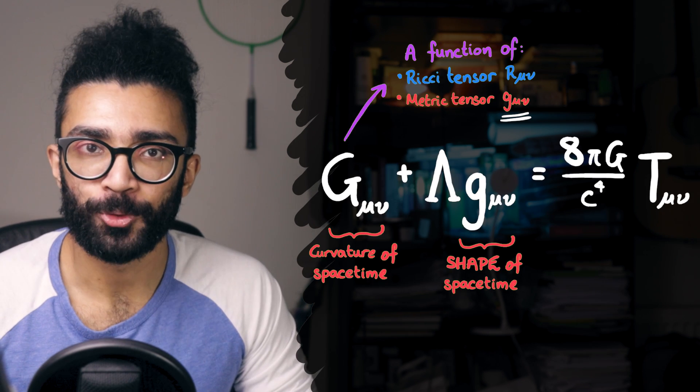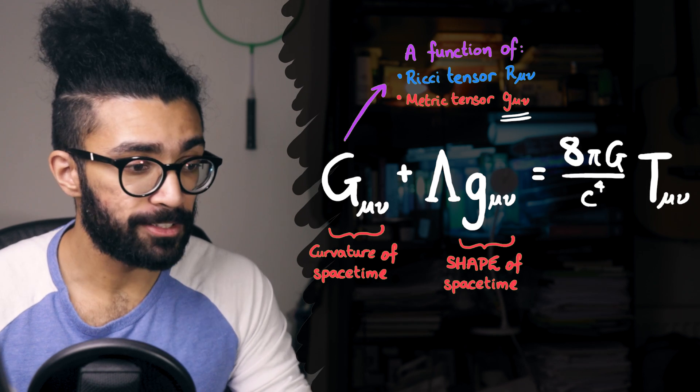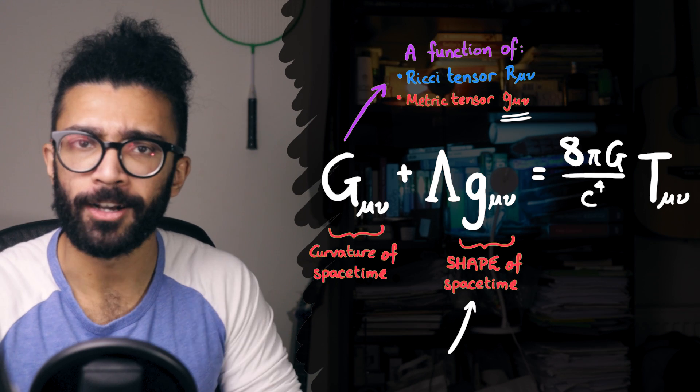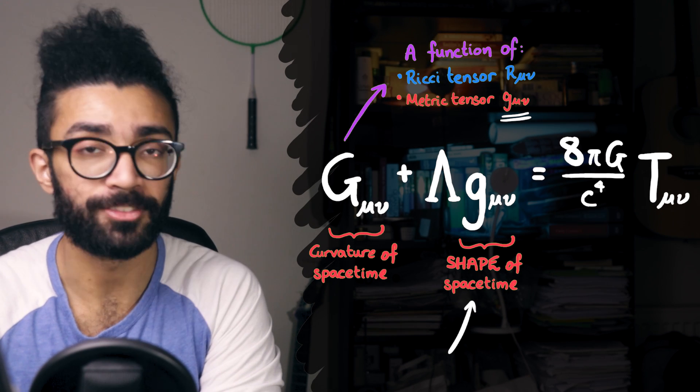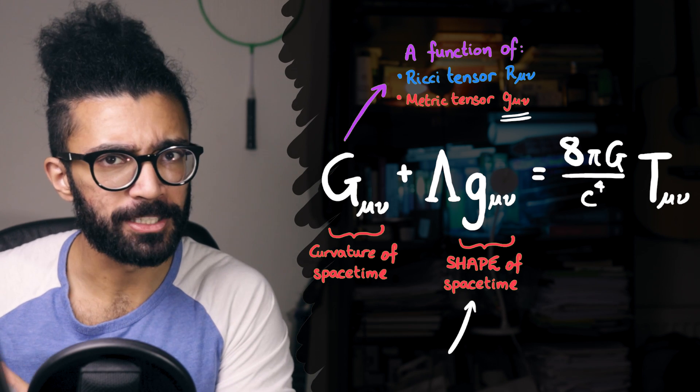Now, if capital G mu nu, the Einstein tensor which deals with the curvature of spacetime, is dependent on the shape of spacetime, as we would expect, then why is there a separate term in the Einstein field equations with g mu nu in it? Well, this is because it accounts for another phenomenon entirely.